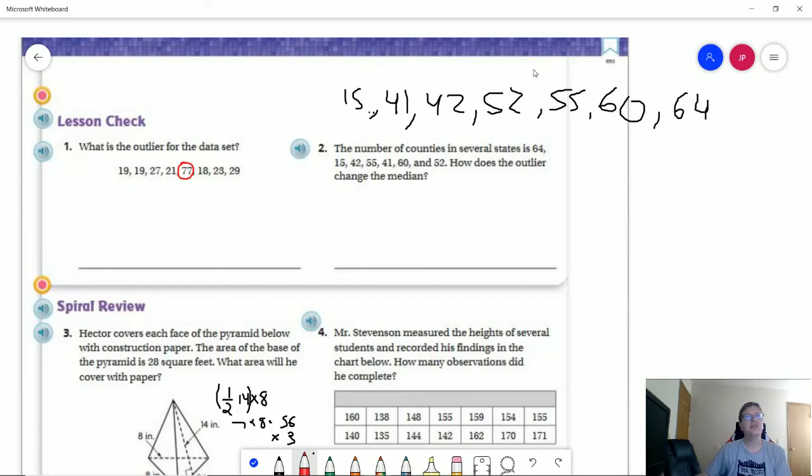Well the median is now going to be 52 whereas before it would have been an average of 52 plus 55 divided by 2. So we would be looking at 53.5 and it went down to 52. So this lowered the median for that.